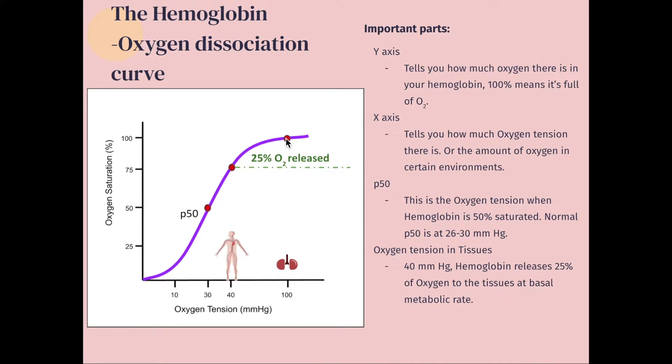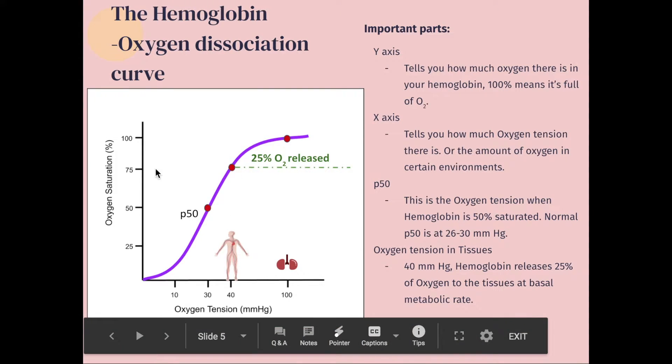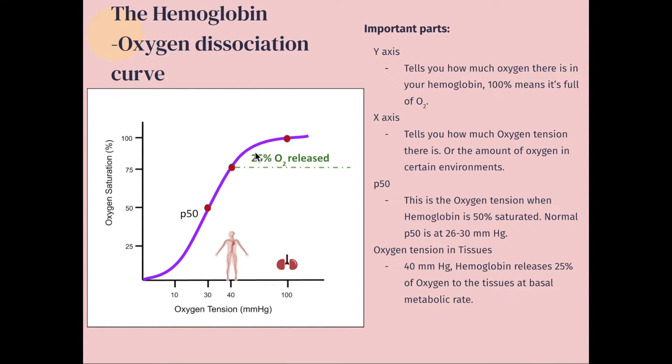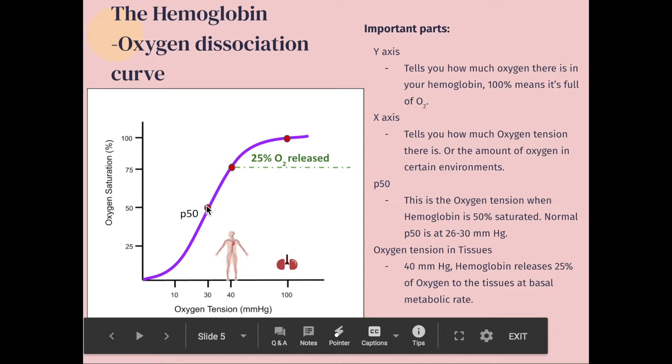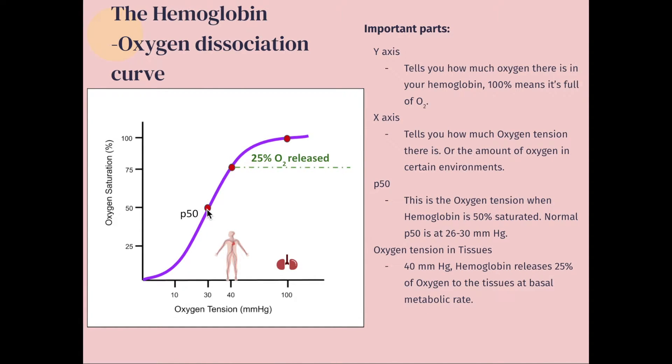And then when your hemoglobin molecules travel to the tissues, it drops off 25% of the oxygen. So in the tissues, there's only 75% oxygen saturation. And you have lost 25% from when you came from your lungs. And then lastly, the P50 right there. So this is the oxygen tension when saturation is at 50%. And that's it. That's the hemoglobin oxygen dissociation curve.